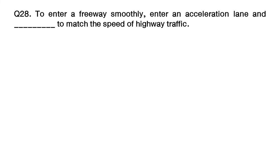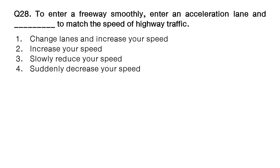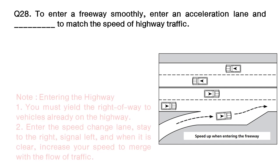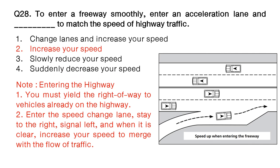Question: to enter a freeway smoothly, enter an acceleration lane and increase your speed to match the speed of highway traffic. Option number 1: change lanes and increase your speed. Option number 2: increase your speed. Option number 3: slowly reduce your speed. Option number 4: suddenly decrease your speed. The answer is option number 2: increase your speed. Note — entering the highway: number 1, you must yield the right-of-way to vehicles already on the highway; number 2, enter the speed change lane, stay to the right, signal left, and when it is clear, increase your speed to merge with the flow of traffic.